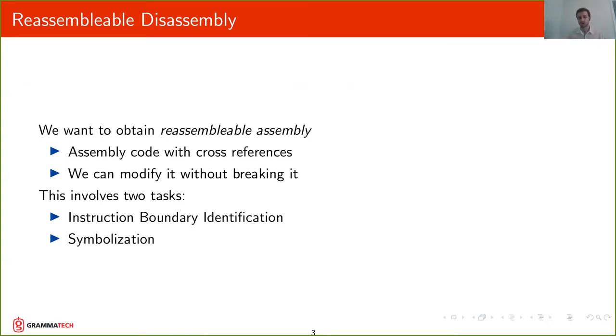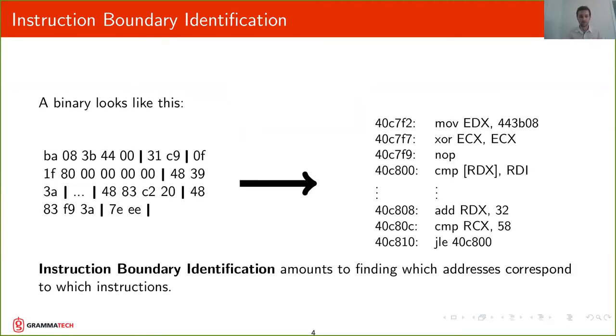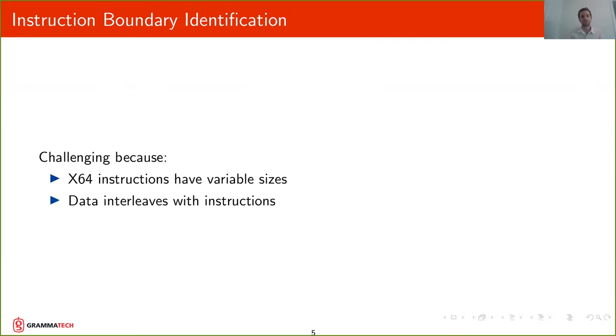So this involves two tasks: instruction boundary identification and symbolization. If you look at a binary, the binary doesn't come with boundaries on where instructions start and end. So the first thing that we have to do is figure out where these boundaries are, where instructions start and where instructions end. And this can be challenging in an architecture such as x64 because instructions have variable sizes and you can have data that interleaves with instructions.